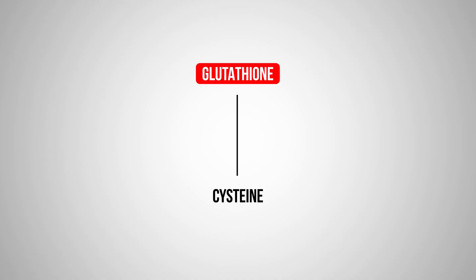Glutathione is a tripeptide, meaning three amino acids. Cysteine is one amino acid, and it sits in the middle of glutathione. There are two other amino acids on each side, and those would be glutamine and glycine.